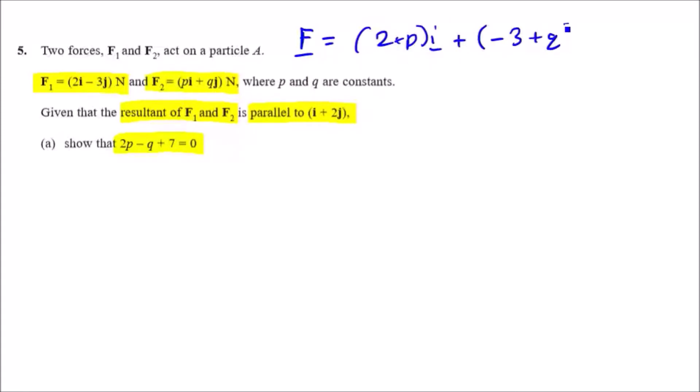Now we know that this F is parallel to this vector. First things first, let's just have a sketch of i plus 2j, see what it looks like. This essentially means one unit to the right and two units up.